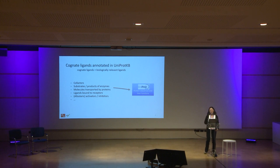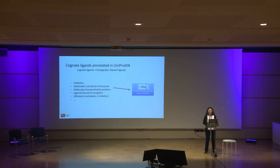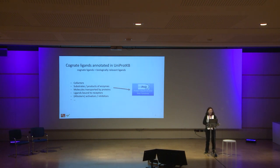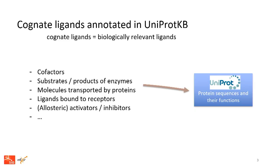What are the ligands we annotate in UniProtKB? UniProtKB is a reference resource of protein sequences and functional annotation that covers over 200 million protein sequences from all branches of the tree of life. These annotations include descriptions of biologically relevant ligands, also known as cognate ligands, such as cofactors, substrates and products of enzymes, molecules transported by proteins, ligands bound to receptors, allosteric activators and inhibitors, and so on.